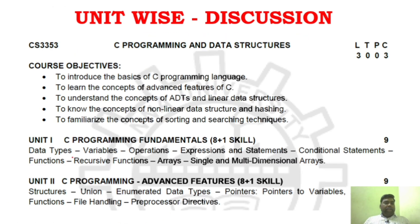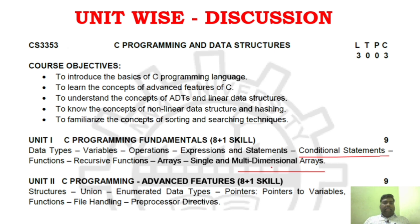In Unit 1, it may seem like a small unit but you have a lot of topics to cover. You have to be familiar with both program concepts and theory. Conditional statements and arrays are the most important areas in Unit 1. Similarly, in Unit 2, structures, unions, pointers, and variables are the most important areas.